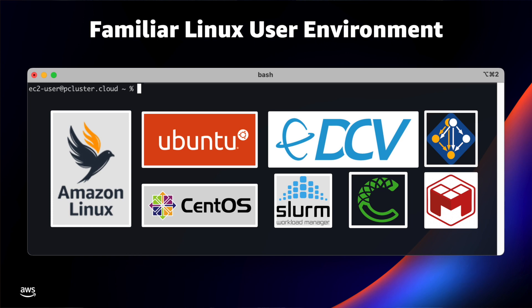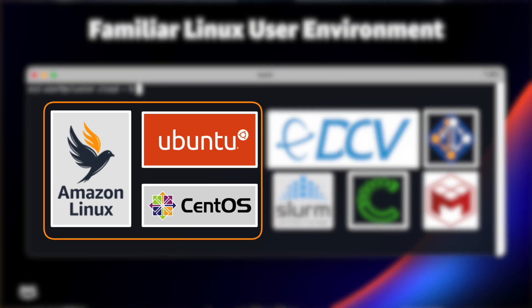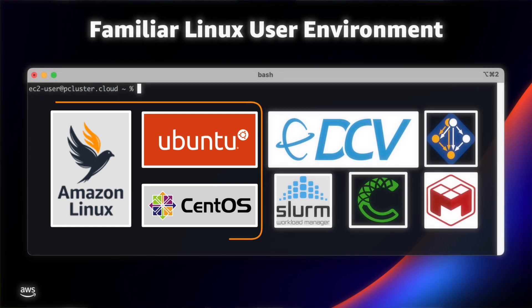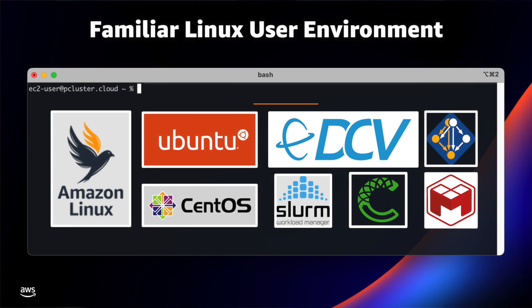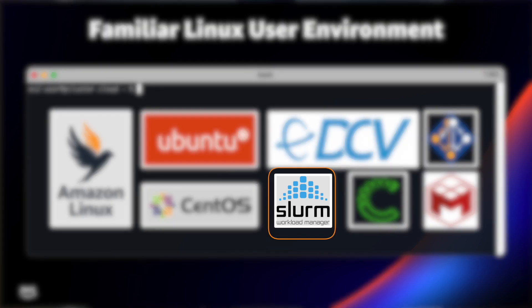You'll find a Parallel Cluster HPC environment really familiar. The operating system is going to be Ubuntu, CentOS 7, or Amazon Linux — that's your choice. You can install and manage applications using common tools like Conda, modules, and SPACK. You can access a remote desktop or do interactive visualization using NICE DCV. And of course, the ever-popular Slurm scheduler is used for scheduling resources.